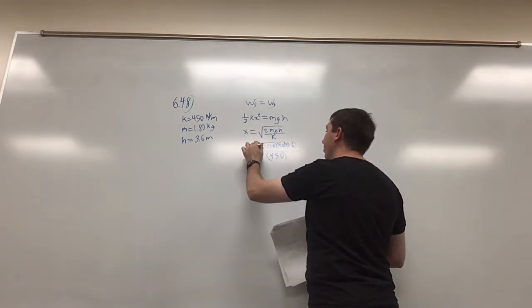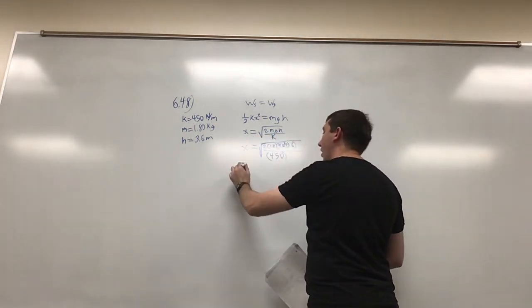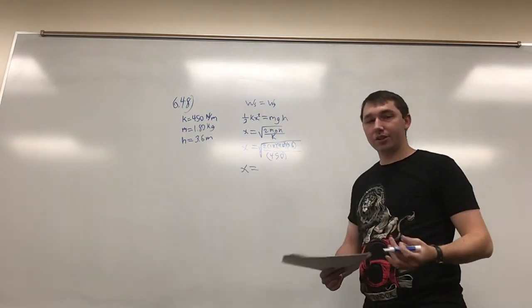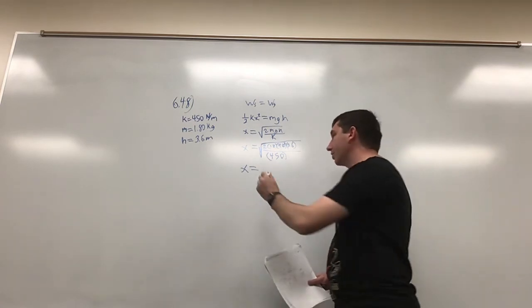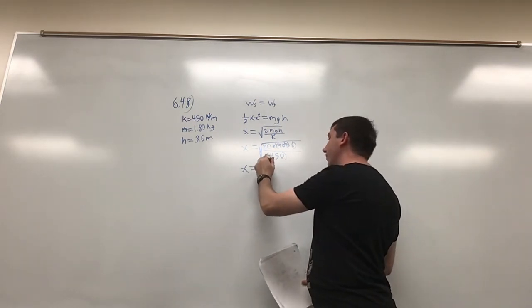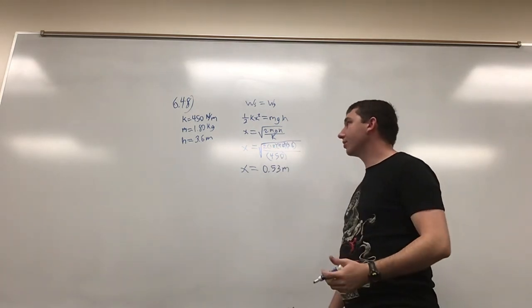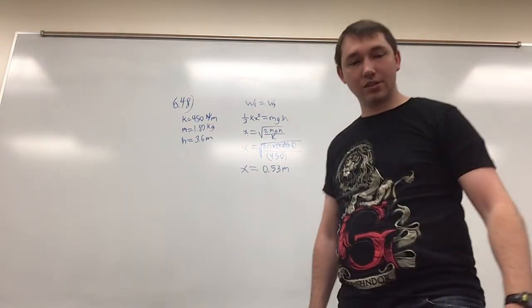So when we do the math, you go through a calculator and you find that the spring needs to be compressed 0.53 meters, or 53 centimeters, in order to get that brick up to the height of 3.6 meters.